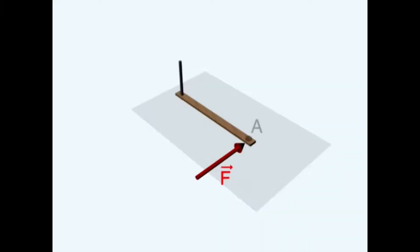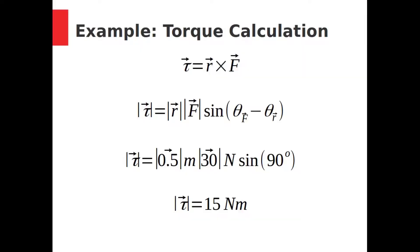In this example, we see a force of 30 newtons being applied a distance of 0.5 meters from the center of rotation. The angle between the lever arm and the force is 90 degrees. The size of the torque is therefore 0.5 meters times 30 newtons times the sine of 90 degrees.